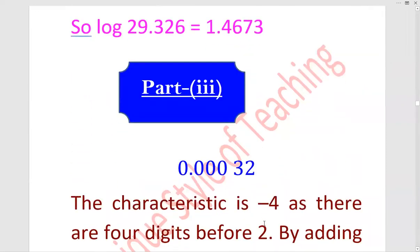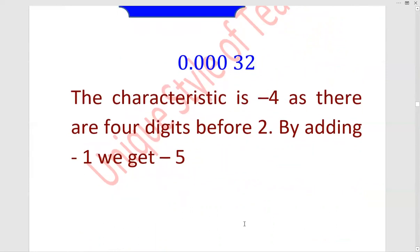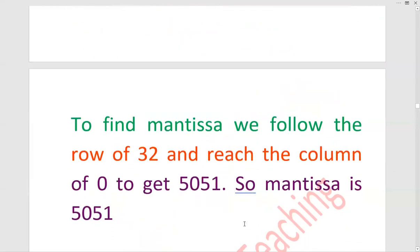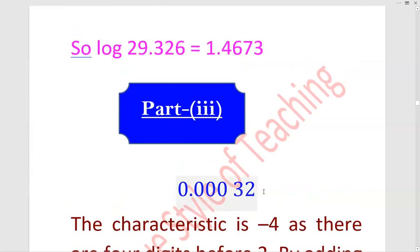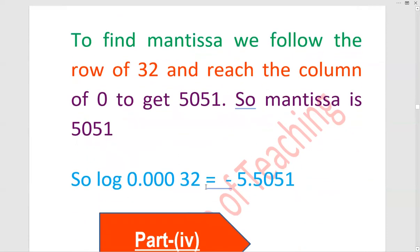Part 3: 0.00032. اب دیکھیں یہ 3 تک اگر اس کو کاؤنٹ کریں تو یہ 4 ڈیجٹس بنتے ہیں، تو characteristic is minus 4. اور اس میں minus 1 add کرتے ہیں تو یہ ہو جائے گا minus 5. 32 کا log table میں 0 کے کولم میں ویلیو 5051 ہے۔ کیونکہ characteristic minus 5 ہے، minus 5.5051 is the answer.